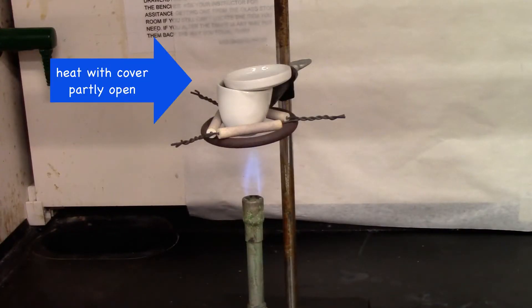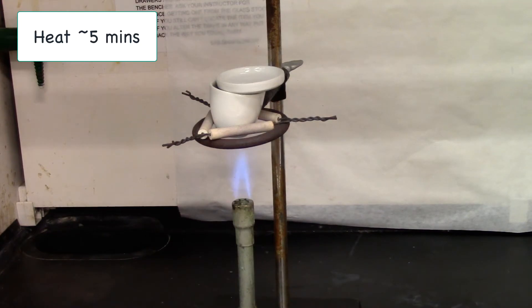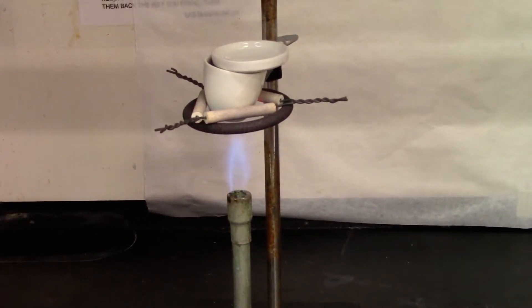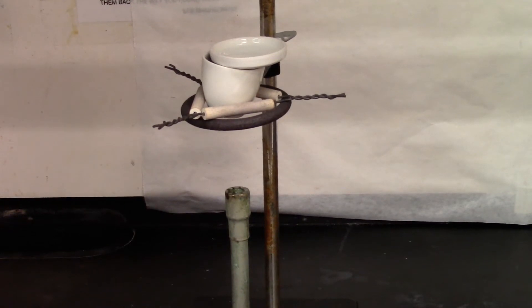I will let the empty crucible heat for about five minutes and then cool it down and get the empty mass of the crucible with the lid. We'll turn off the gas and let the crucible cool down before we can weigh it out.